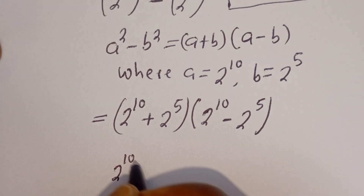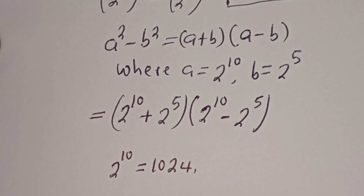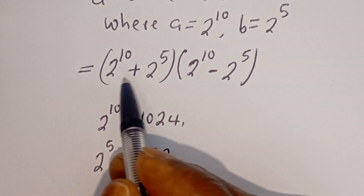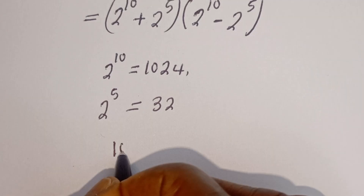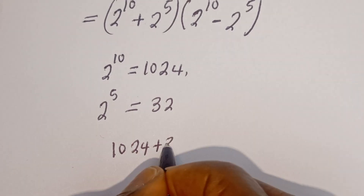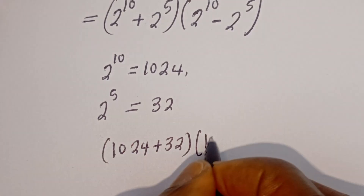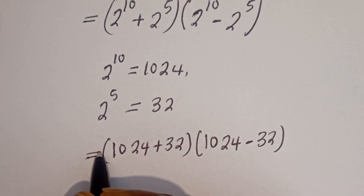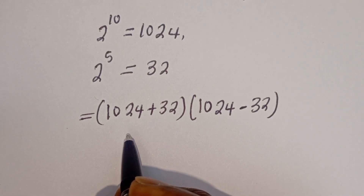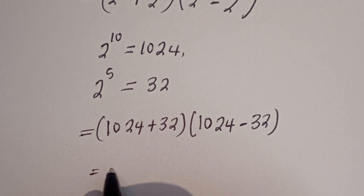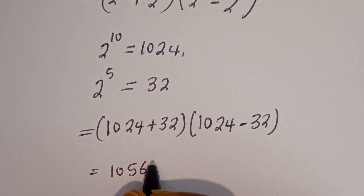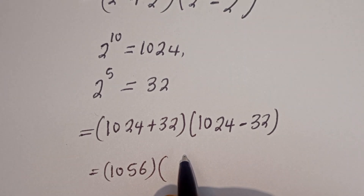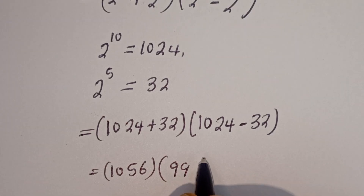Now, 2 to the power of 10 is equal to 1024, and 2 to the power of 5 is equal to 32. Then this can be written as 1024 plus 32, bracket, 1024 minus 32. That gives us 1056 bracket 992.